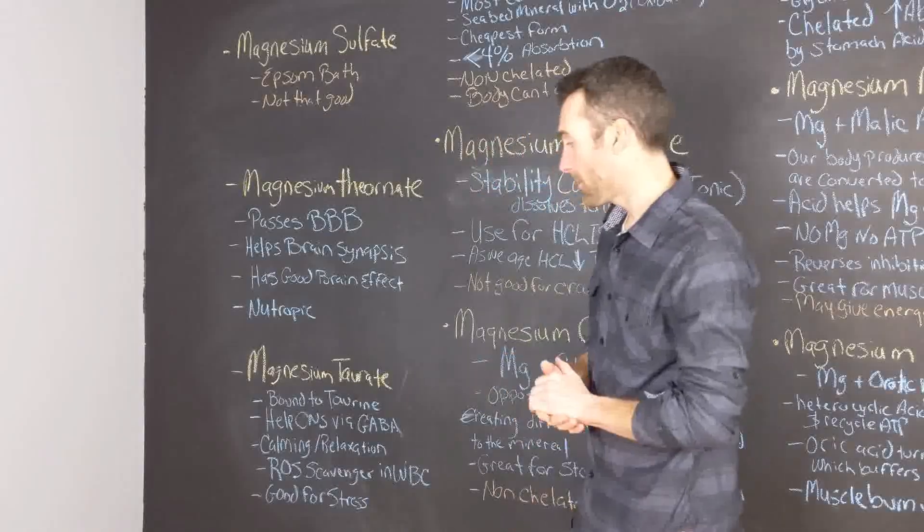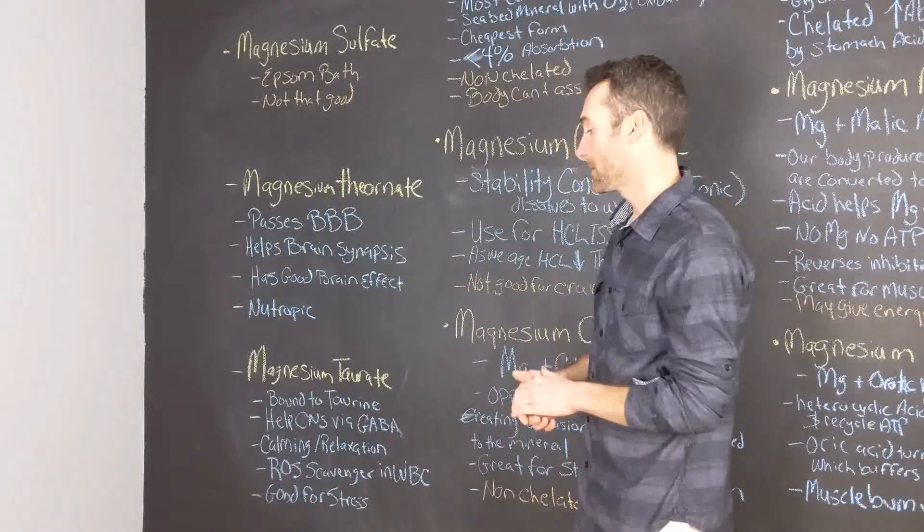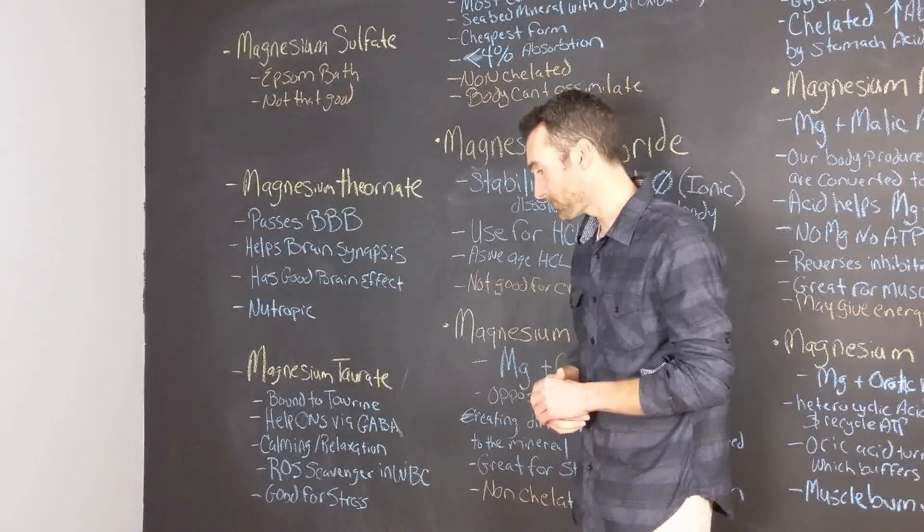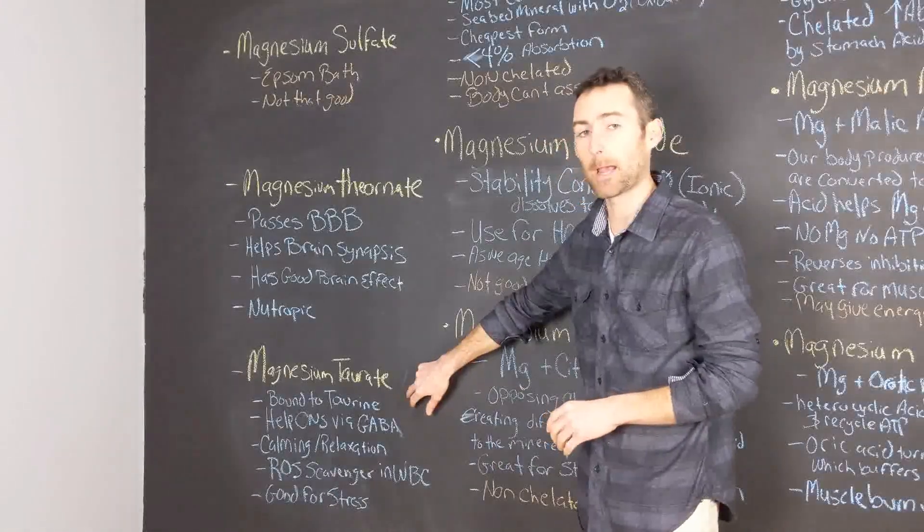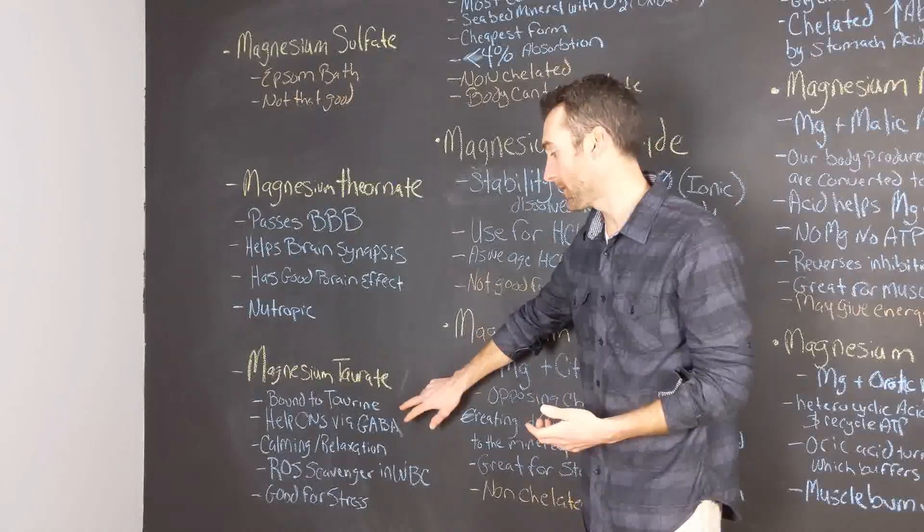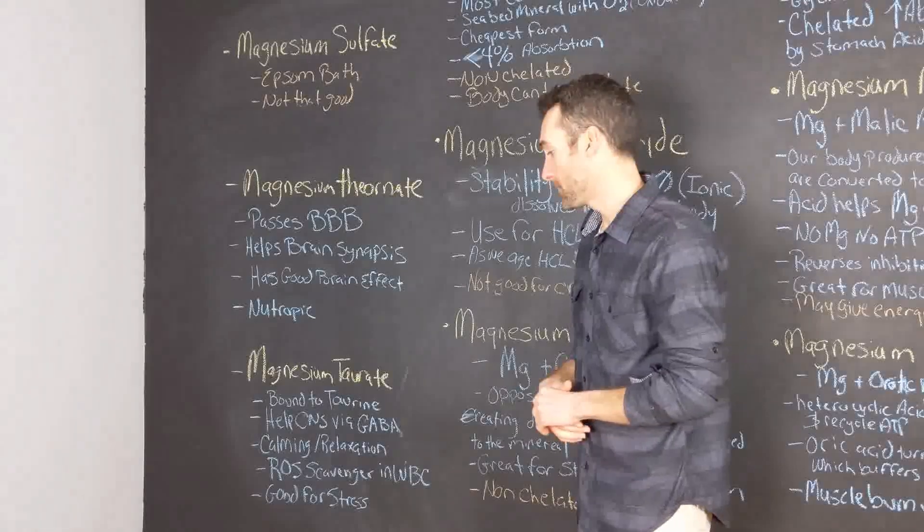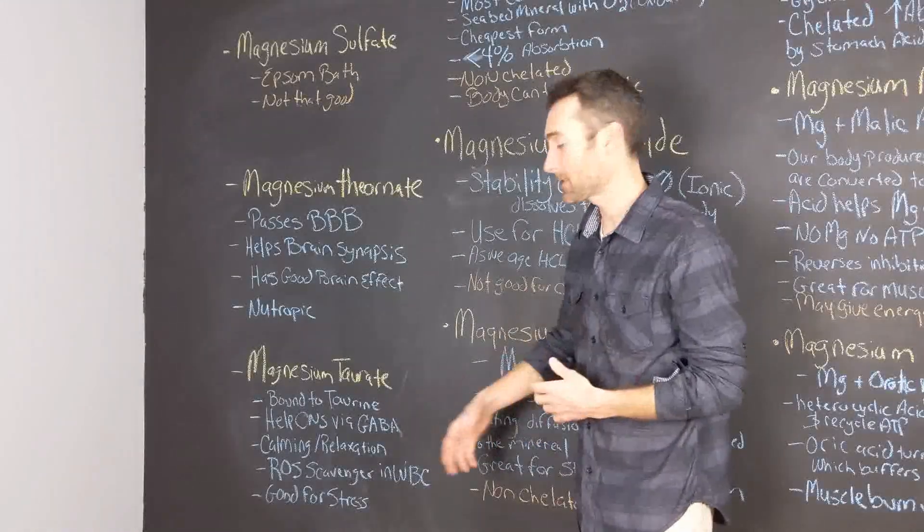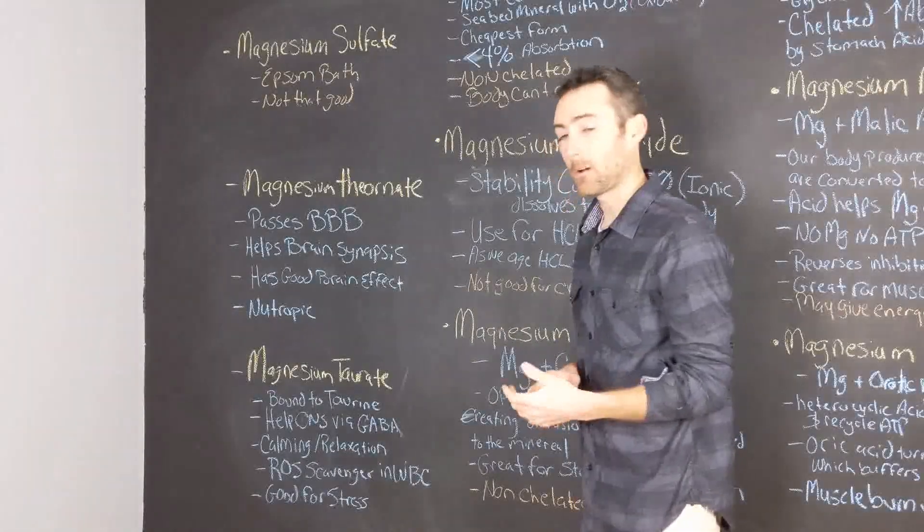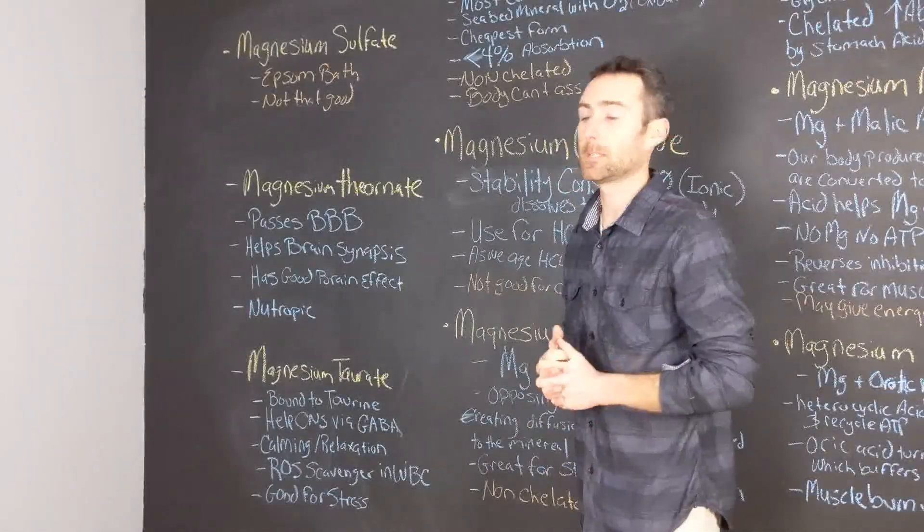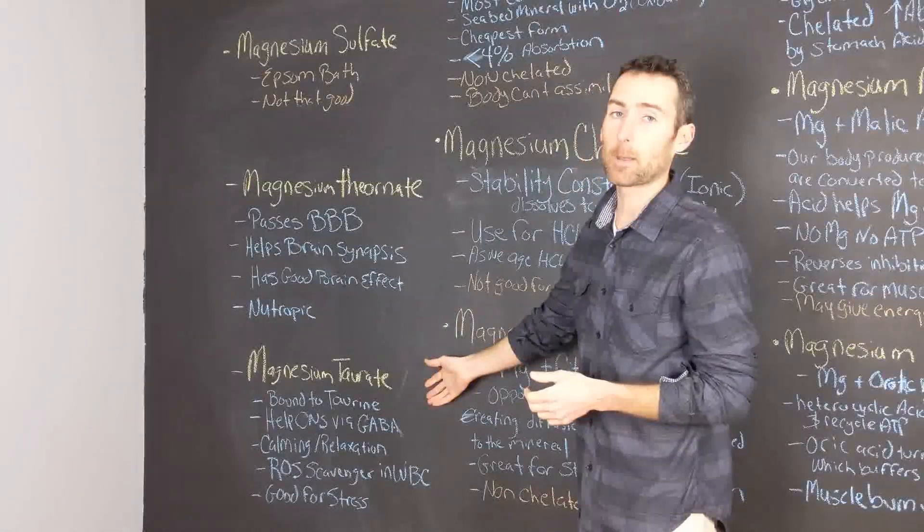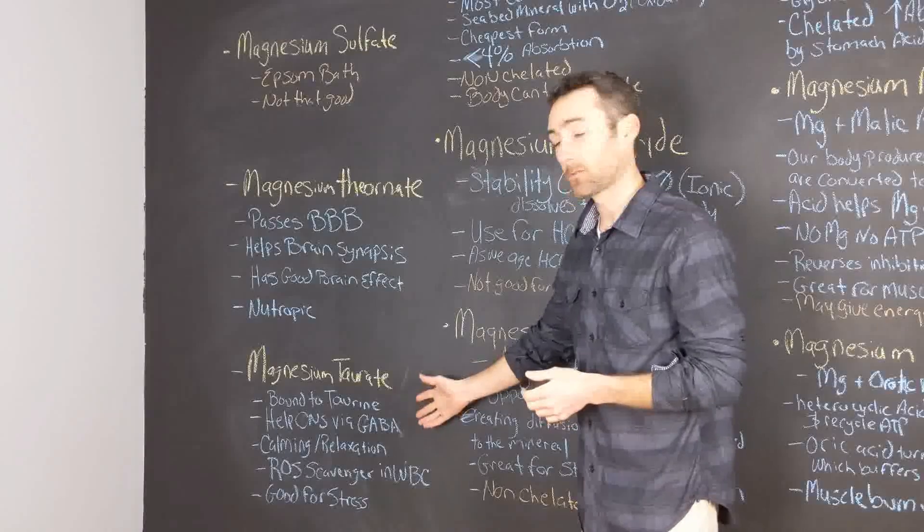The next form of magnesium is magnesium taurate. It's magnesium-bounded taurate. This is another amino acid. This is a great form of magnesium to alleviate stress and anxiety because it works on the GABA system. I would say if you need to calm down or relax this is a good form. Not many people use it but you could try it for that. Also it's a good reactive oxygen species scavenger in the white blood cells.